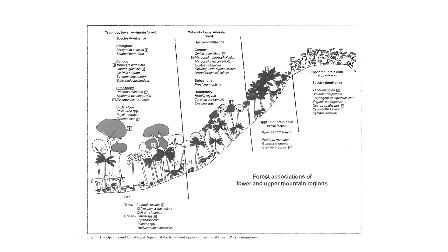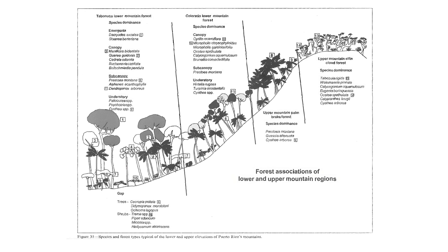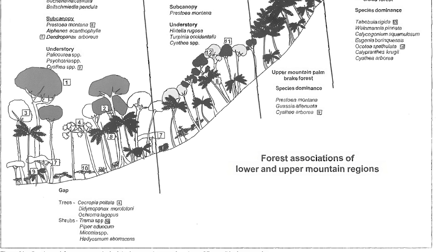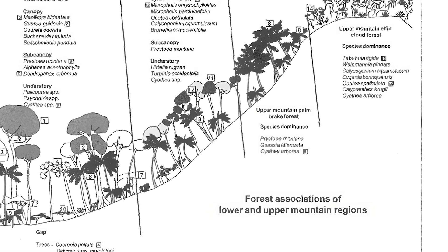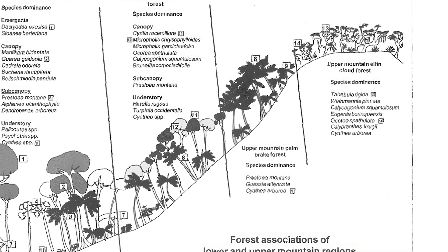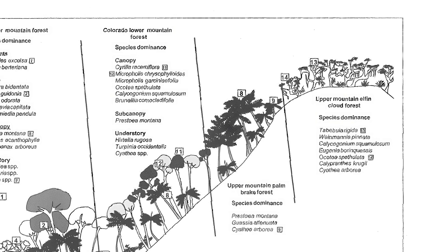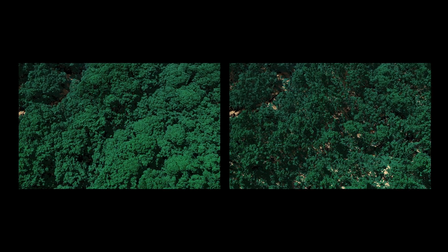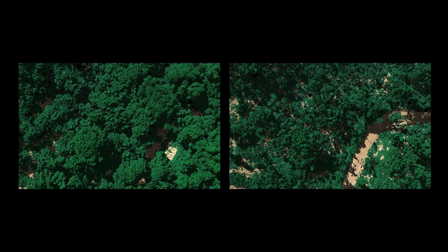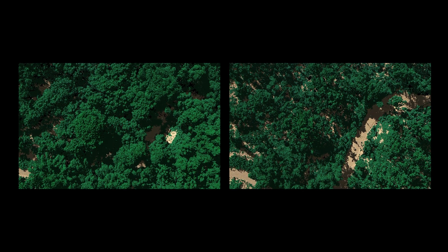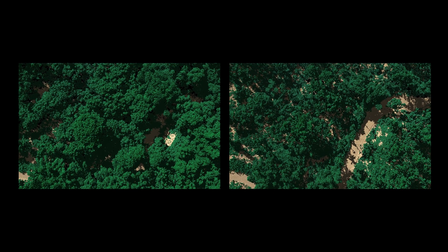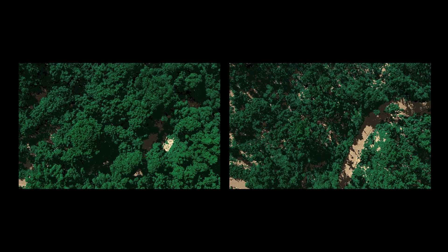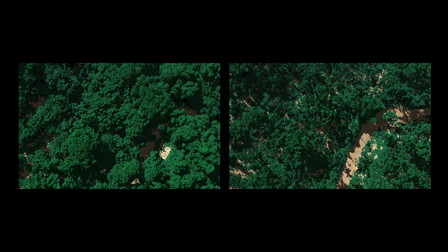Puerto Rico exemplifies a tropical forest adapted to extreme hurricane disturbance. Forest types of the island are well defined along its altitudinal gradients. In another series of G-Lite flight campaigns over Puerto Rico, Hurricane Maria's devastating impact on El Yunque National Forest can be seen in this split-screen visualisation.